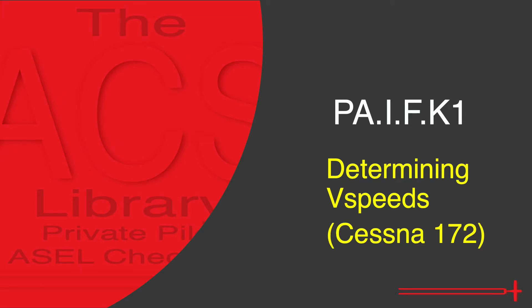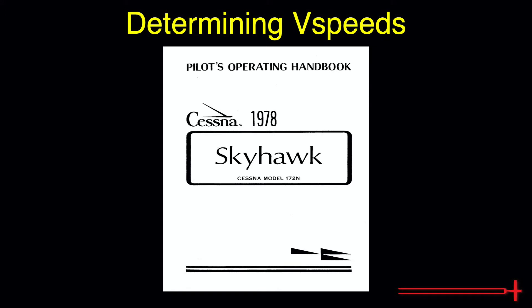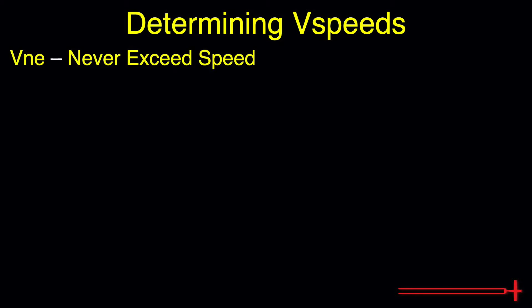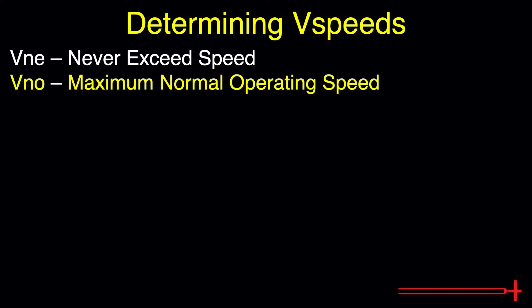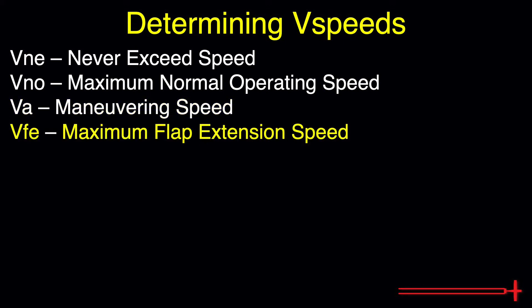We will use a 1978 172 November model as our example aircraft. The V-speeds we are going to identify are VNE, the never exceed speed; VNO, the maximum normal operating speed, oftentimes referred to as maximum structural cruising speed; VA, the maneuvering speed or the speed at which we may use abrupt control travel; and VFE, the maximum flap extension speed, which is generally also the maximum flap operating speed in trainer aircraft.